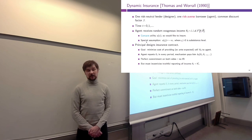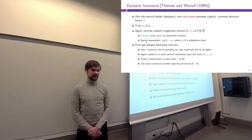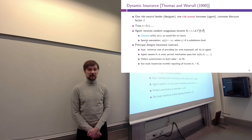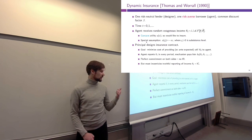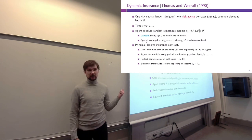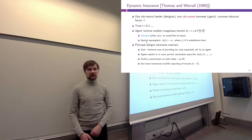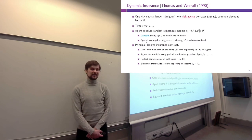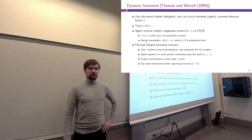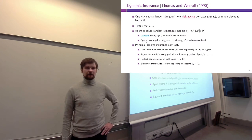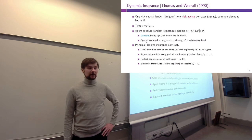We assume perfect commitment on both sides. This relates to how the government is one of the only agents in the economy who can actually enforce participation, so we do not worry about agents being willing to participate. What we do care about is incentive compatibility — agents must have incentives to report their income truthfully in every period.